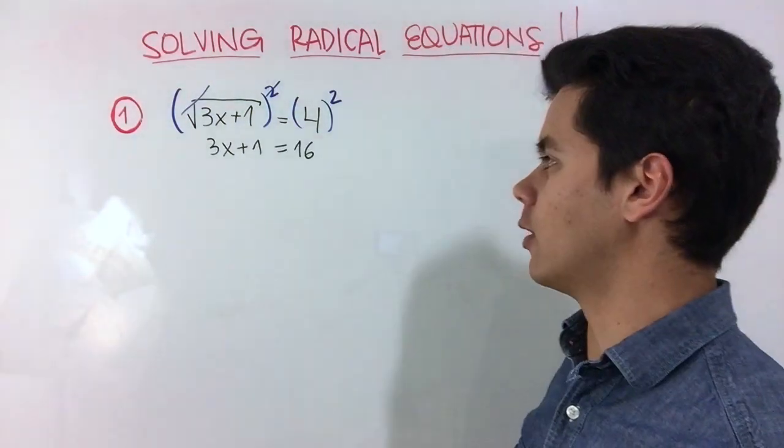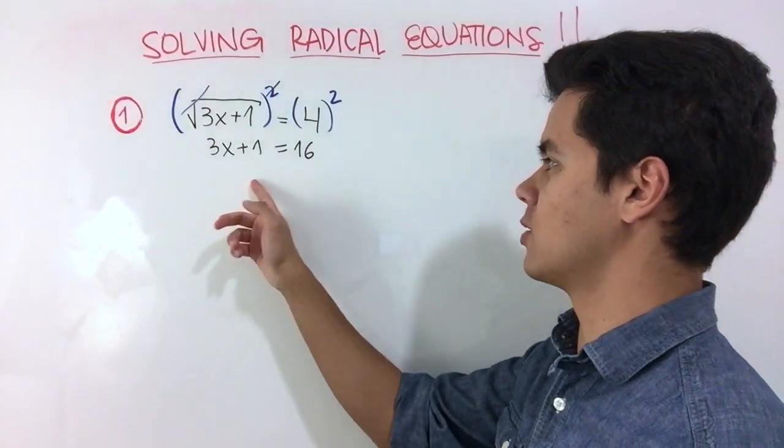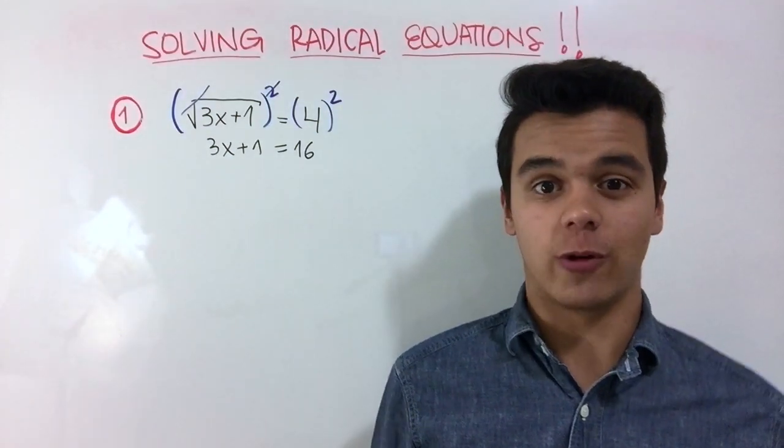If we clean this up a little bit, we end up with 3x plus 1 equals 16. And then we just solve it as a normal equation.